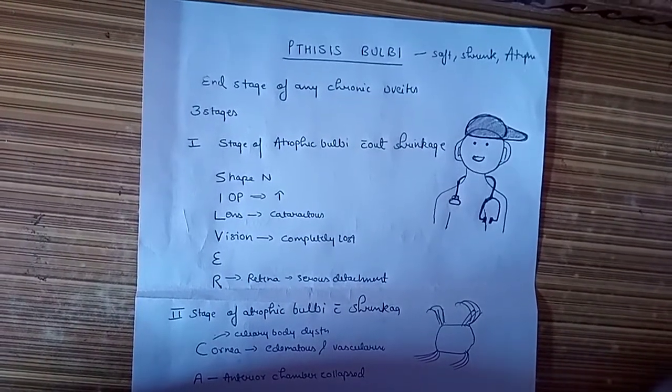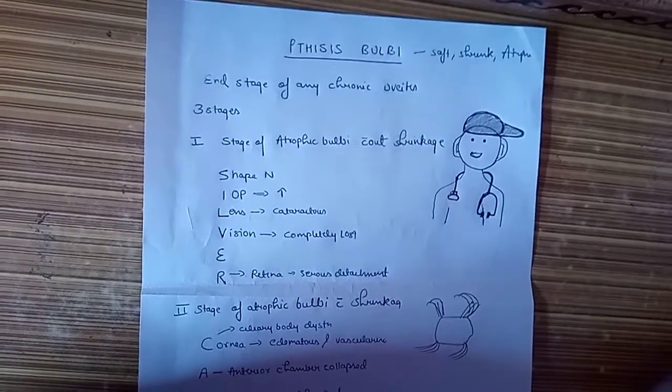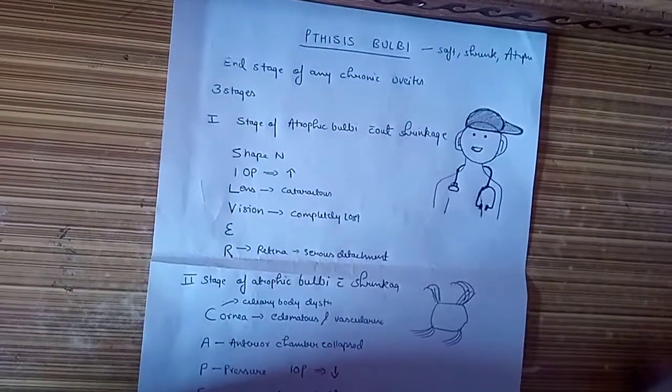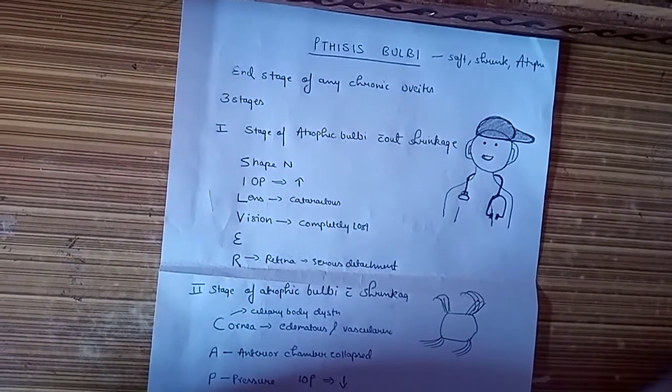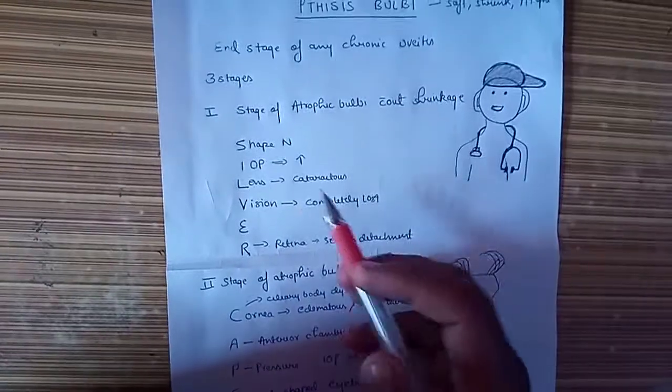Stage one is atrophic bulbi without shrinkage, meaning we have an eye which has completely lost its function and is undergoing inflammation but still is not shrunken. The mnemonic for it is SILVER.